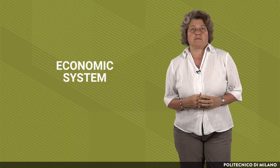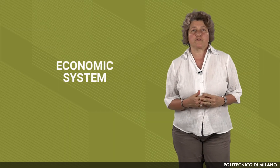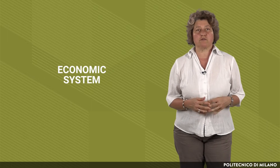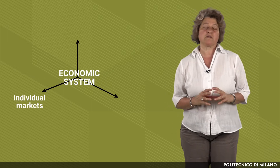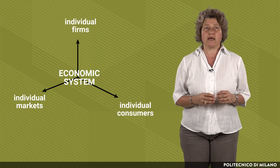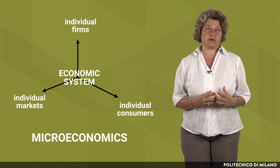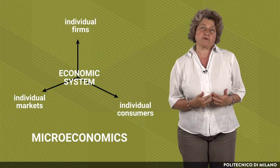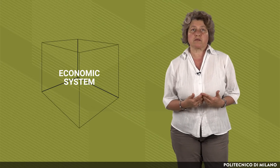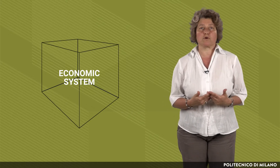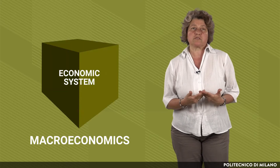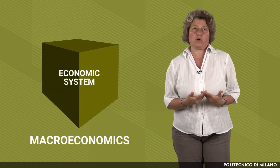An economic system can be observed from different perspectives, considering individual markets, individual consumers, individual firms — and this is microeconomics. A different perspective to look at an economic system is the macro view, or macroeconomics, which considers the system as a whole.